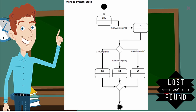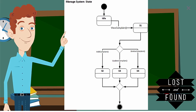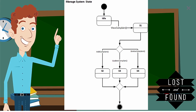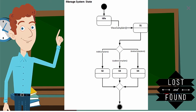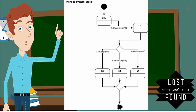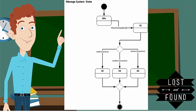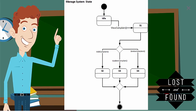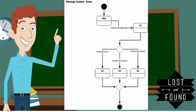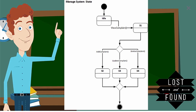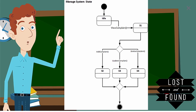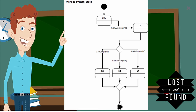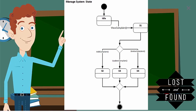After the view complaint method call, it goes to state S1. Then a decision node decides the path based on different methods — add complaint, update complaint, or delete complaint. If the admin chooses add complaint, it goes to state S2. If the admin chooses update complaint, it goes to state S3. If the admin chooses delete complaint, it goes to state S4. A merge node then combines all three paths and goes to a final node indicating the end of the manage system state model.